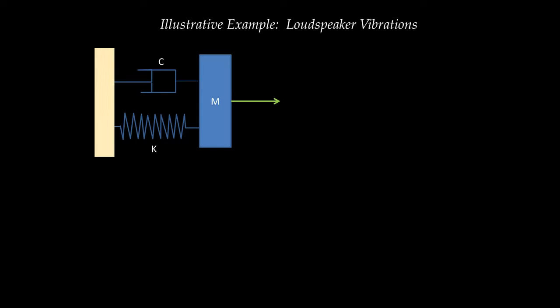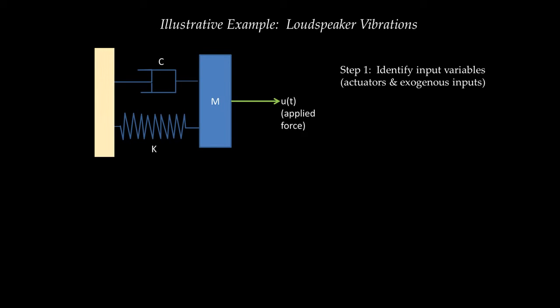Going through the five-step process: Step 1 is to identify input variables. I'll ignore exogenous inputs for simplicity and focus on control inputs. The main actuator is the electric circuit, which applies a force on the mass. So my input u(t) is a scalar — the applied force on the mass.